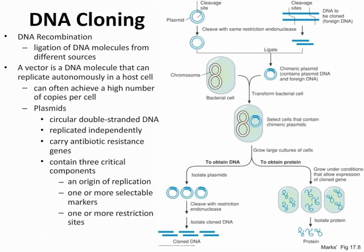Following the left-hand side of the diagram, multiple plasmids are made, allowing us to isolate the purest form of the clone for detailed molecular analysis. On the right-hand side, we can grow them under conditions that allow expression of the cloned gene to make proteins. Know that plasmids are circular, double-stranded DNA; they replicate independently, carry antibiotic-resistant genes, and contain an origin of replication, one or more selectable markers, and one or more restriction sites.